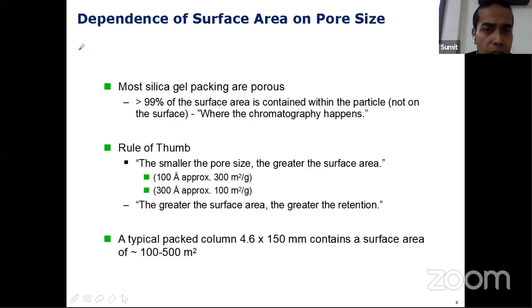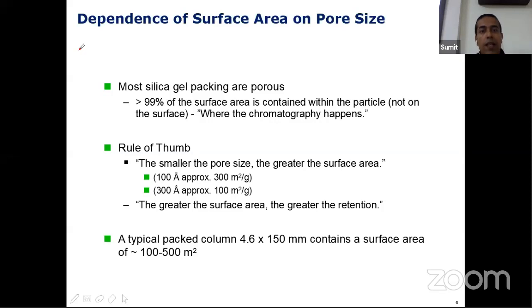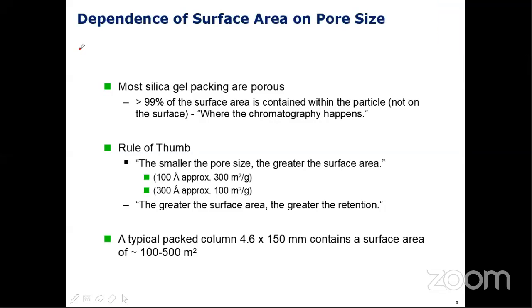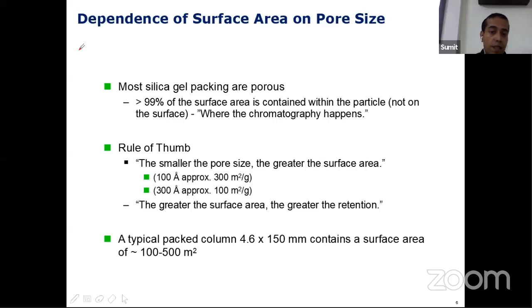Most silica gel packings are porous. Previously we used non-porous particles, but nowadays that is not the case because of the several advantages of porous particles. The pore is the part of the particle where the chromatography happens — more than 99% of the surface area is contained within the particle; it doesn't happen on the surface. That is why pore size is so important. The rule of thumb is: the smaller the pore size, the greater the surface area, which is pure physics. And the greater the surface area, the greater the retention, and therefore you can expect better resolution. So that's why the chemistry is correlated with the pore size.